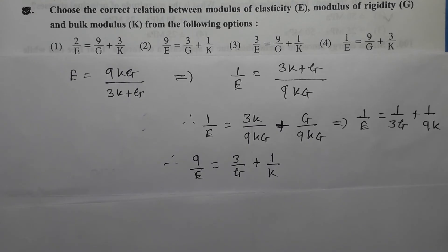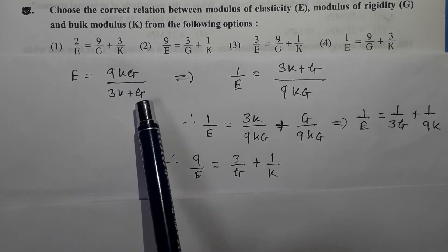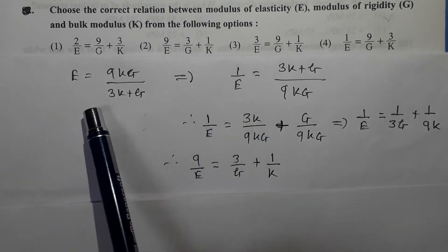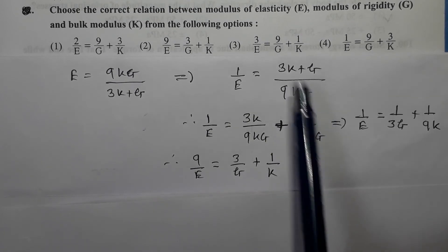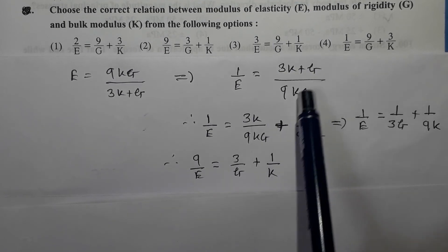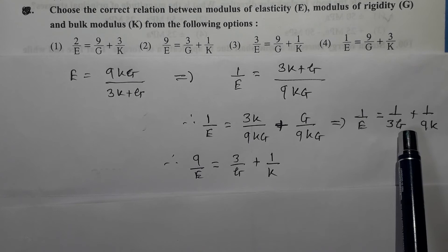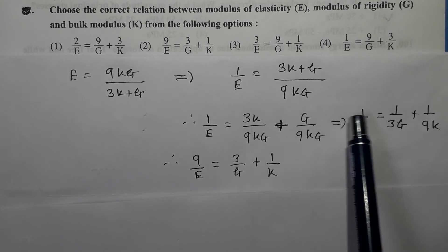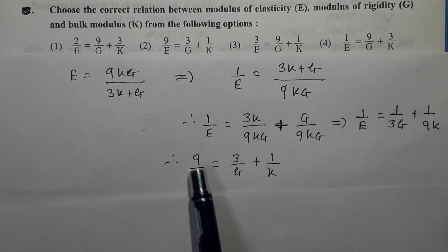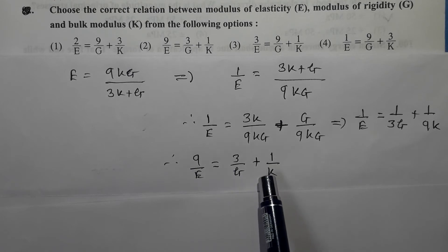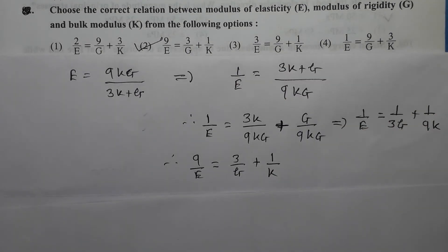Next question: Choose the correct relation between modulus of elasticity E, modulus of rigidity G, and bulk modulus K. We have previously proved the relation E = 9KG / (3K + G). Rearranging: 1/E = (3K + G) / 9KG = 1/3G + 1/9K. Multiplying throughout by 9: 9/E = 3/G + 1/K. So option 2 is the correct option.